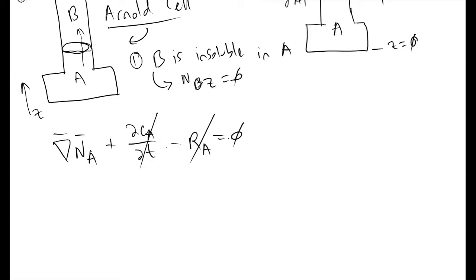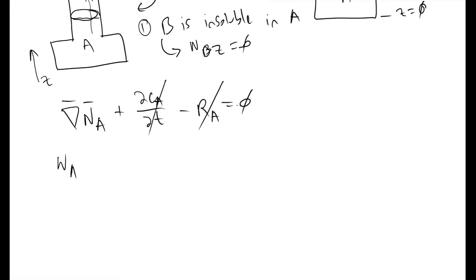Analyzing and dissecting our flux vector, Na is equivalent to minus C, your total concentration, times the diffusion coefficient of A into B times the partial derivative of your molar ratio of A in the Z direction plus the molar ratio of A times the flux of A in the Z direction. This is not the flux vector, this is just flux of A in the Z direction, a component of your flux vector.